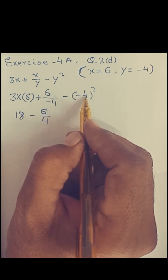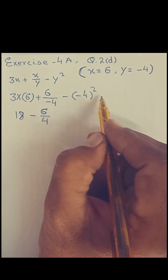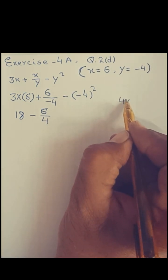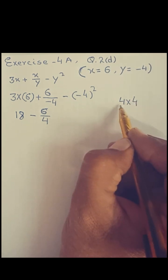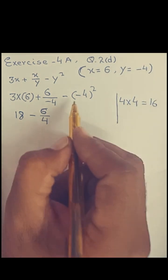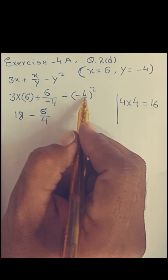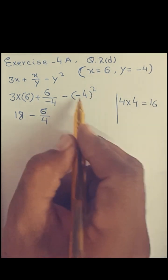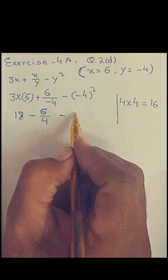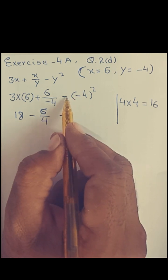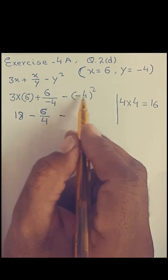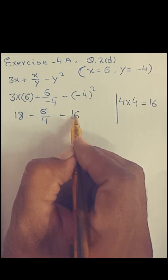The power 2 is an even number, so the minus sign becomes plus. Then 4 to the power 2 means 4 multiplied by itself, which is 16. So minus 4 squared becomes positive 16. However, the outer sign is minus, so minus into plus gives minus 16. Our expression is now: 18 minus 6 over 4 minus 16.